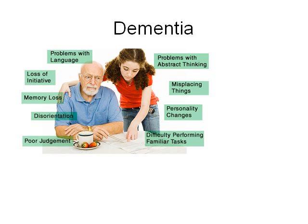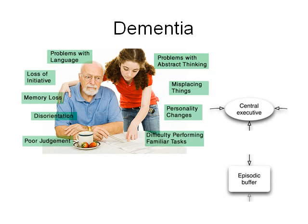Another topic that students may want to apply working memory to is dementia, and indeed some students will be looking at this as part of the key question in cognitive psychology. Dementia is a tragic illness involving the gradual loss of cognitive faculties, mostly in older age. Whereas the previous applications examined looked at the slave systems, dementia seems to be a problem with the central executive as well, which loses its ability to manage working memory effectively. It may also be a problem with the episodic buffer, which is a vital link between working memory and long-term memory.